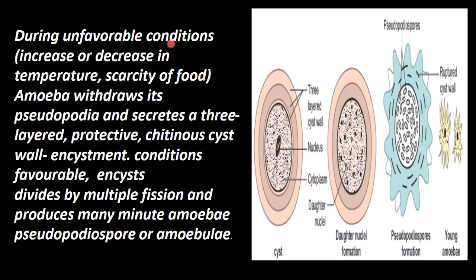During unfavorable conditions — such as increase or decrease in temperature or scarcity of food — Amoeba undergoes encystment. The cyst has two layers: an outer chitinous wall. This is called encystment. When favorable conditions return, this cyst divides by multiple fission and produces many minor amoebae.